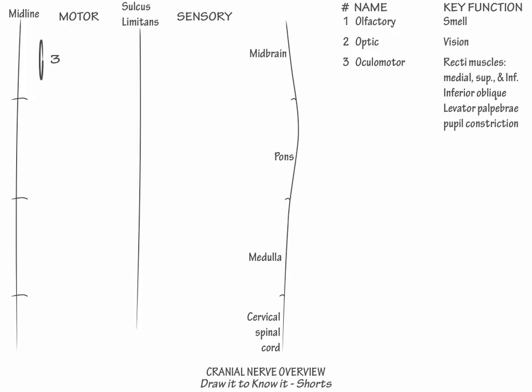Next, in the caudal midbrain, draw cranial nerve 4, the trochlear nerve, which innervates one extraocular muscle, the superior oblique. Then in the pons, draw cranial nerve 6, the abducens nerve, which also innervates one extraocular muscle, the lateral rectus.